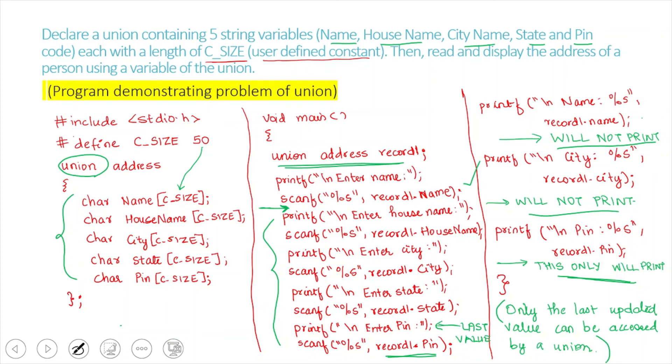But it is the best method to save the memory space. So, if you have to do anything with name or house name, you have to do it immediately after it is being stored. So, if you have to print it, you can print it over here. And if you have to print the house name, then soon after scanning, you have to print it. So, you have to use union very wisely. Then only you will be able to save that space.